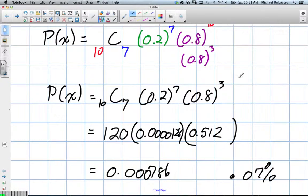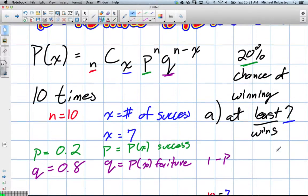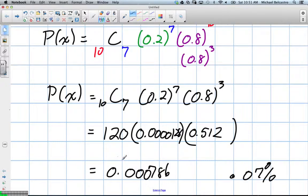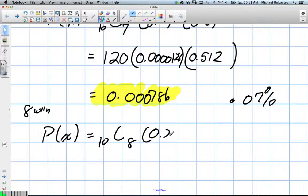Now, that's only of winning 7 out of 10 times. This says at least 7 out of 10 times, which means we're going to have to take these probabilities. So here's one of our answers, and we're going to actually have to add it to the probability of winning 8 times, which we'll have to recalculate. And I'll quickly write the formula. So here's 8 wins, which is going to be 10C8, 0.2 to the 8th, 0.8 to the 2.